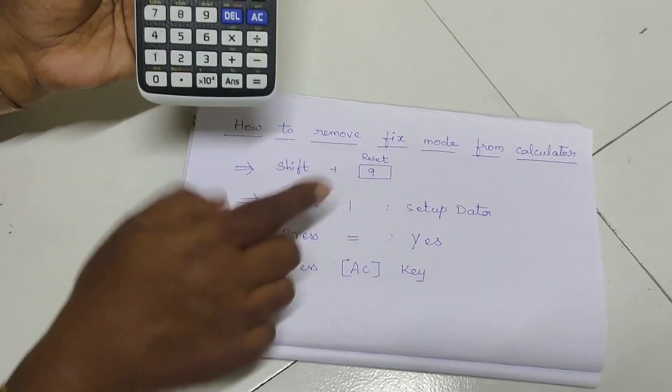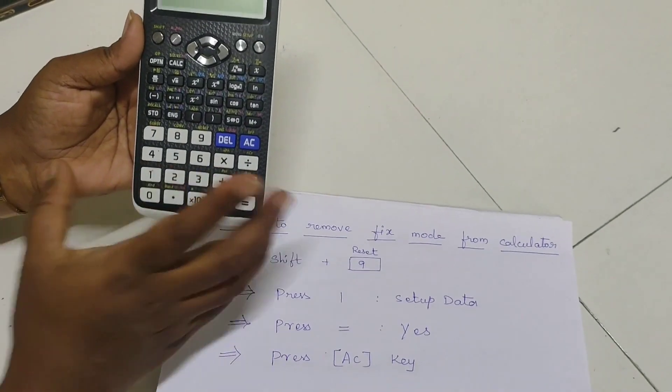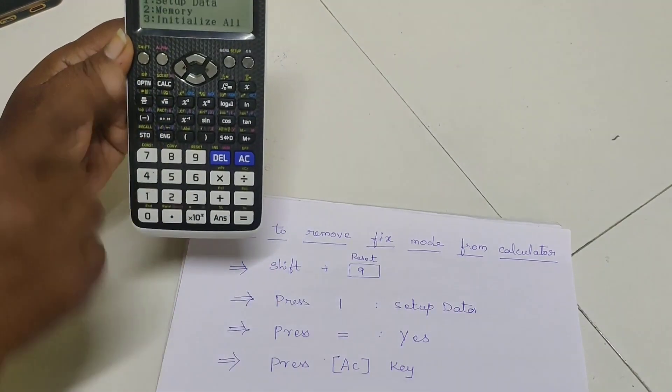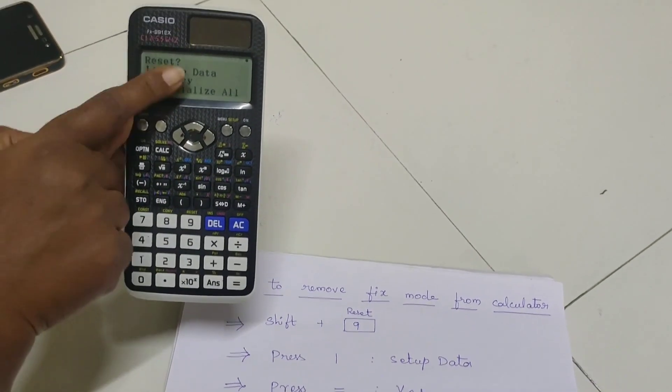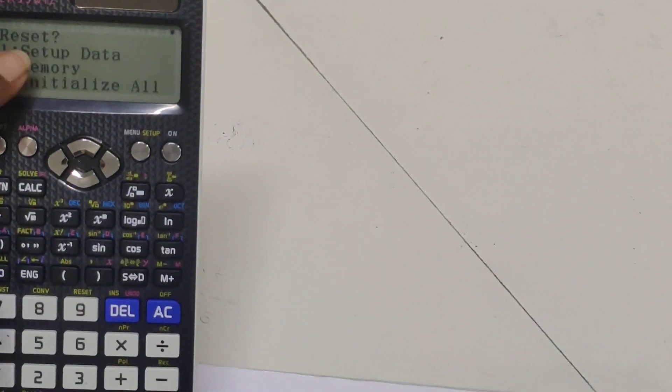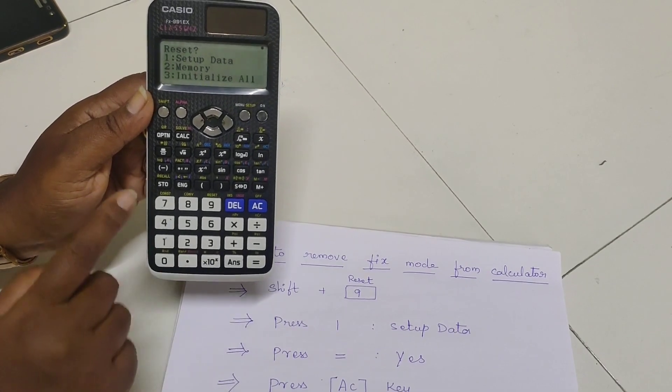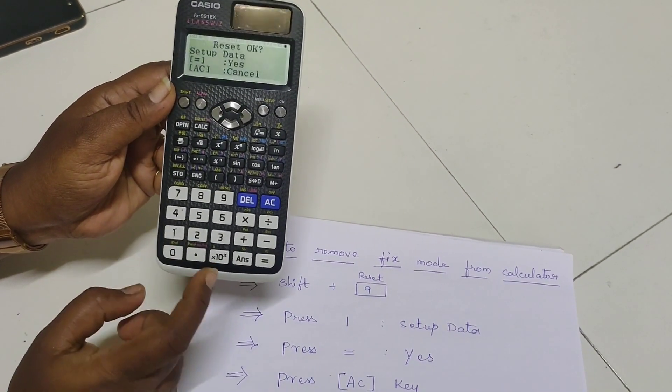Now you see here I am going to follow the steps to remove the fix. Shift of 9. We are getting set number 1 reset 1 2 3 1 is set up data. I have to press 1 to set up the data. The second step is press 1.